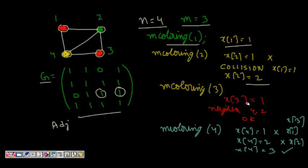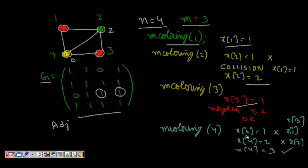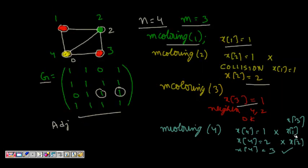For node 3, x3 = 1 is tried first. Its neighbors have colors 0 and 2, so there is no collision and x3 = 1 is valid. We call m_coloring(4). For node 4, x4 = 1 fails because neighbors 1 and 3 both have color 1. x4 = 2 also fails since neighbor 2 has color 2. x4 = 3 succeeds. This gives a valid graph coloring for m=3 and n=4.